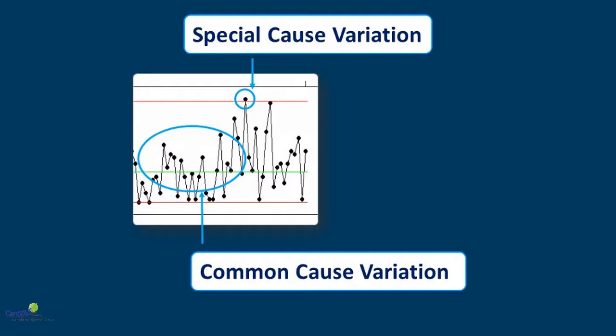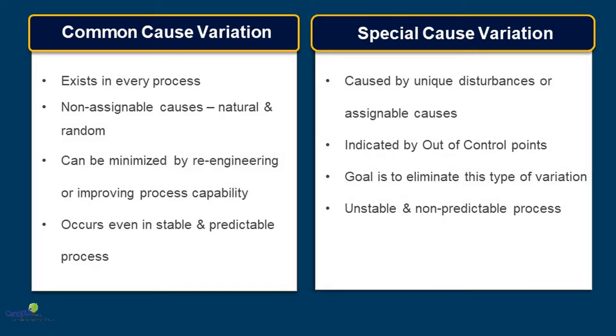The purpose of control chart is to find out whether there is any special cause variation in a process or not. The purpose of control chart is not to minimize the common cause variation. Common cause variation is natural to any process. If you want to reduce the common cause variation, then we have to find ways of increasing the capability of the process by doing improvements to the process by new technology.